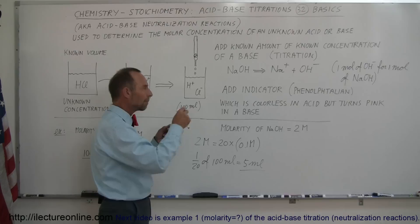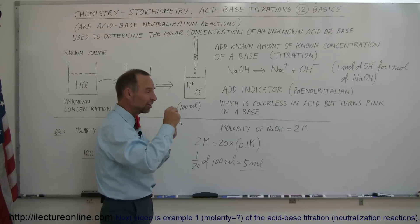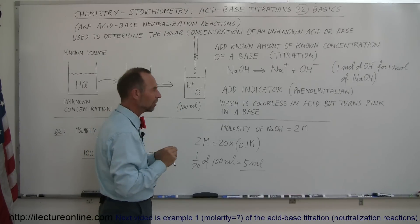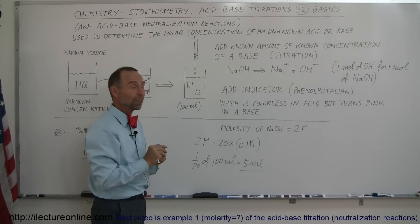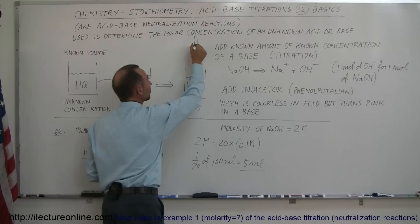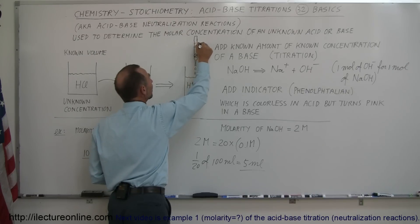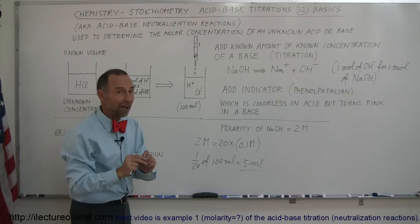If we start with a 100 milliliter sample of the hydrochloric acid at 0.1 molar molarity, and we add 5 milliliters of a base which is 20 times as concentrated, they will cancel each other out. We sit there and start adding drop by drop. After we add 5 milliliters—about 10 drops per milliliter, so about 50 drops—the 51st drop will probably turn the whole solution pink, and then we know we stop at that moment.